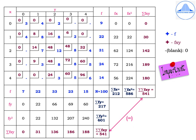For the fx column, multiply each frequency by its corresponding x value: 9 times 0 is 0, 22 times 1 is 22, 31 times 2 is 62, 24 times 3 is 72, 14 times 4 is 56. Summation fx equals 212. For the fx-squared column, multiply fx by the x column: 0, 22, 124, 216, 224. Summation fx-squared equals 586.